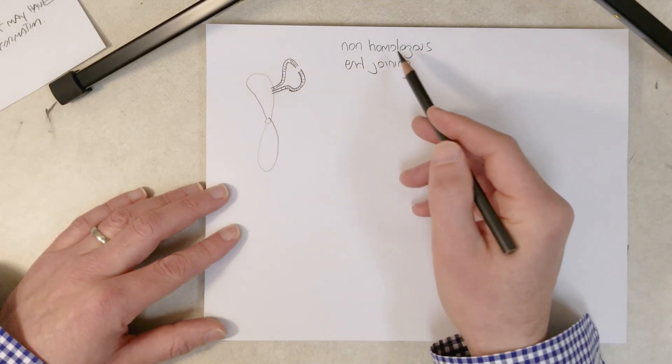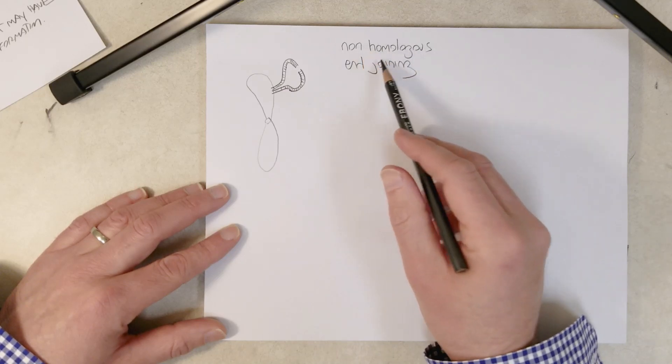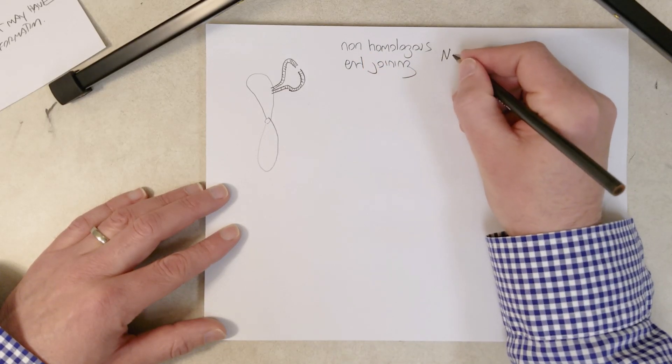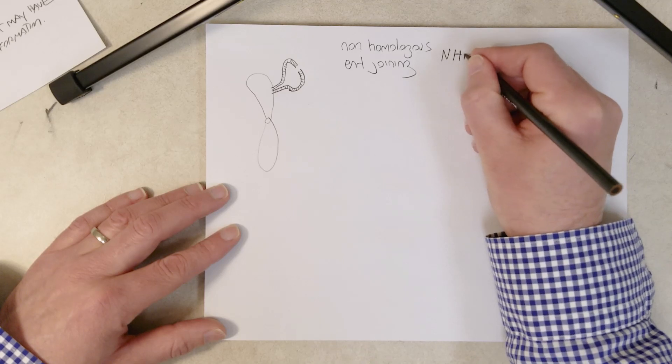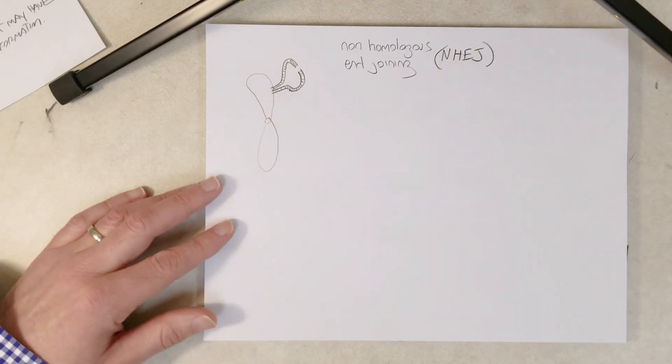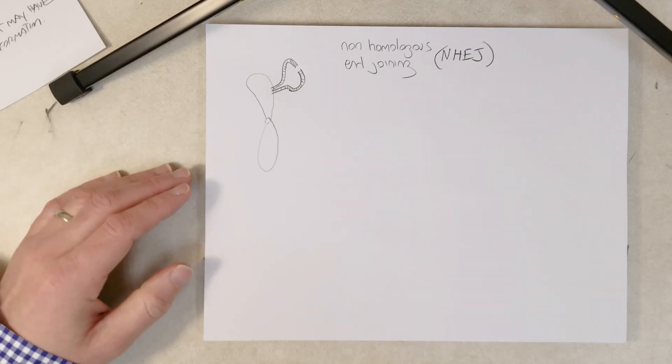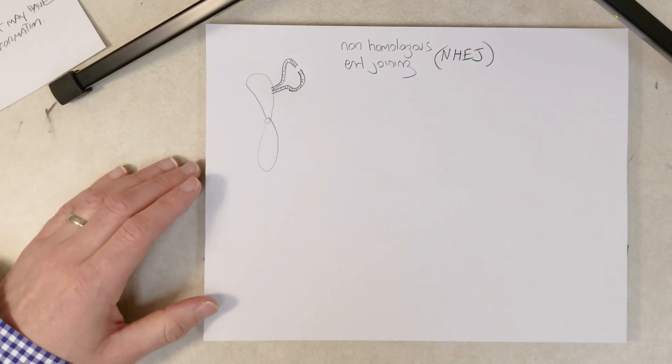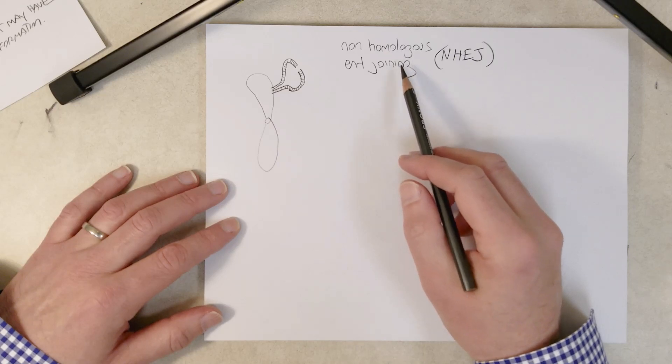So when would this be used? Non-homologous end joining, the abbreviation is NHEJ. And I really want to talk about this here because when we talk about CRISPR-Cas9 based genome engineering in a future lecture, this is going to be important.